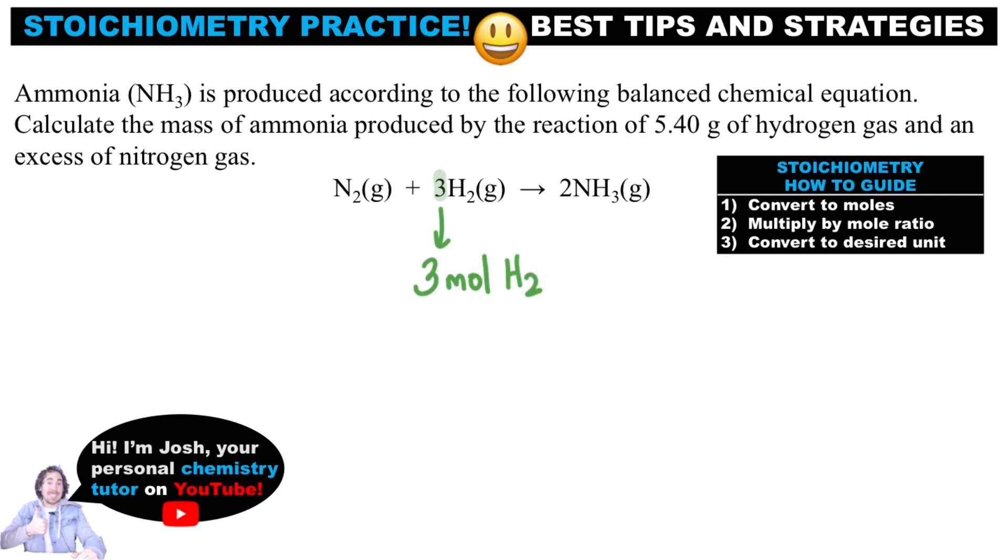In this equation, 3 moles of hydrogen gas produces 2 moles of ammonia gas. Equations are like recipes. If I want to produce 4 moles of ammonia, I just need to double the amount of everything.